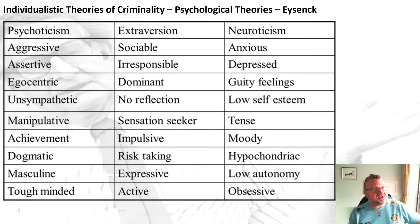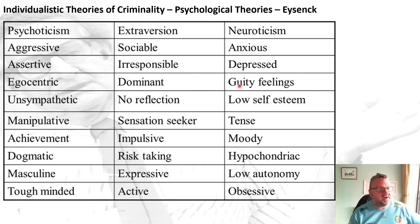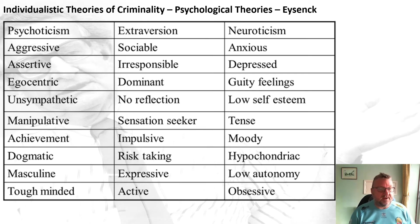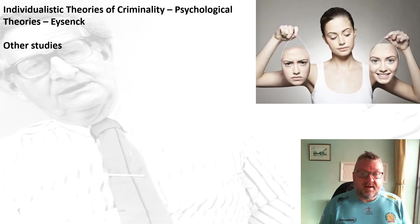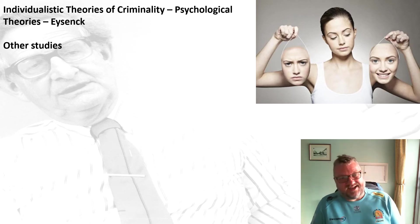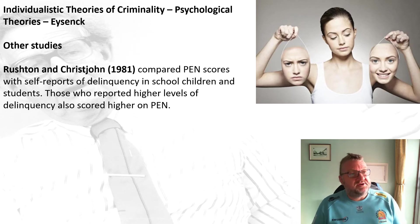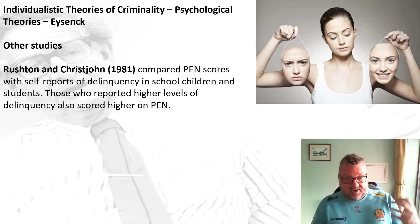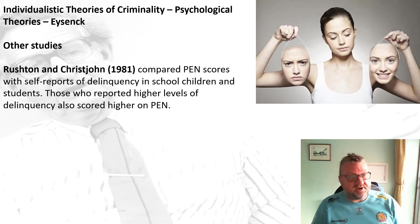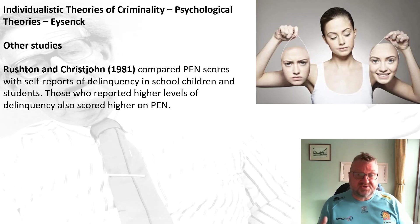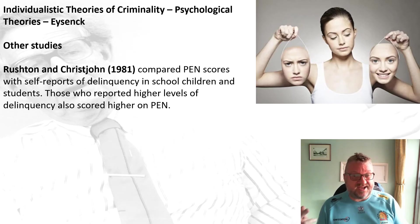You can see some of the character traits linked to high psychoticism, high extroversion, and high neuroticism, and you can see how some of these may lead to the criminal personality. Other studies appear to back up Eysenck's work to some extent. Rushton and Christjohn in 1981 compared PEN scores with self-reports of delinquency in school children and students, and those who reported higher levels of delinquency also scored high on PEN — bearing out Eysenck's theory.